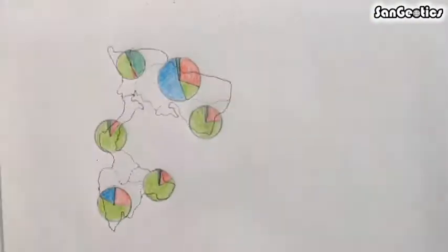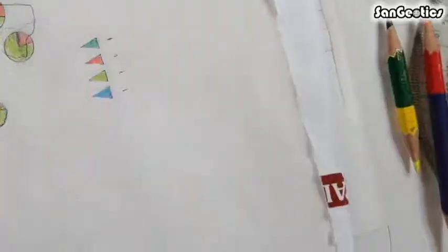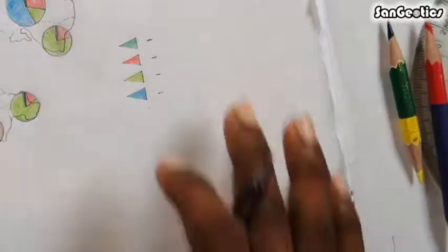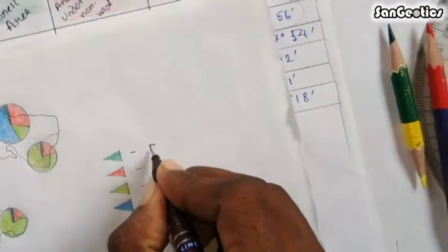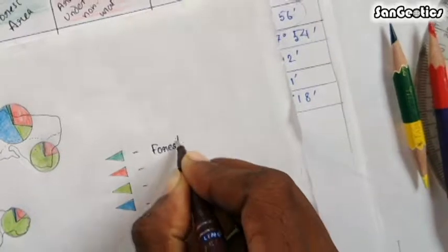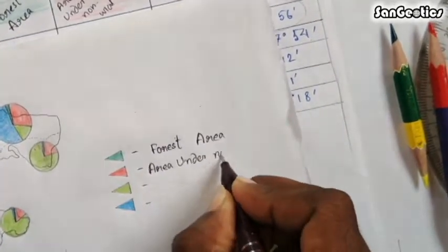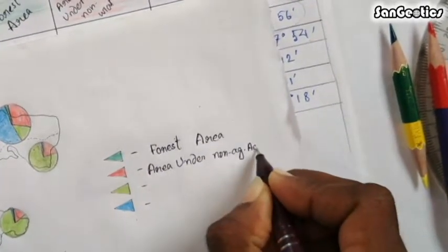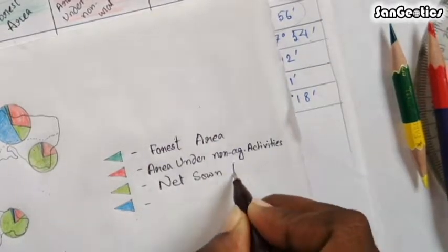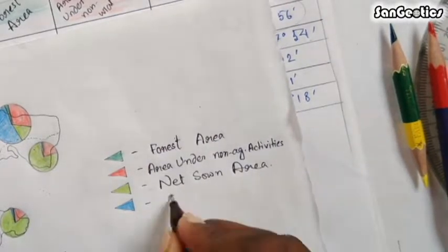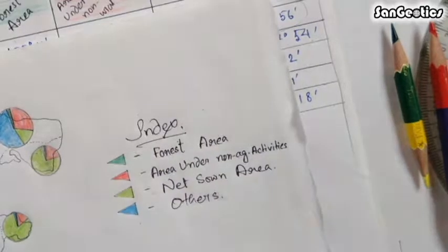Construct an index box: deep green is used to indicate forest area, red color is used to indicate area under non-agricultural activities, light green is used to indicate mid zone area, and ultramarine blue is used to indicate other areas.